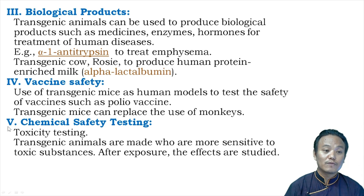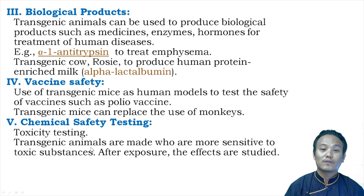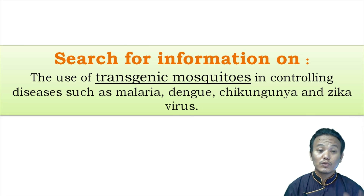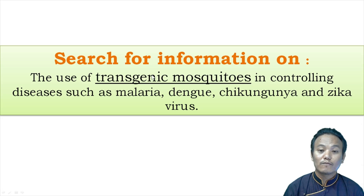The fifth use of transgenic animals is in chemical safety testing, also called toxicity testing. If you want to check the toxic effect of a particular chemical, you can create transgenic animals that are more sensitive to those toxic substances, expose them, and then study the effects on biological cells and tissues. Also, I want you to search for information on the use of transgenic mosquitoes in controlling diseases such as malaria, dengue, chikungunya, and Zika virus.